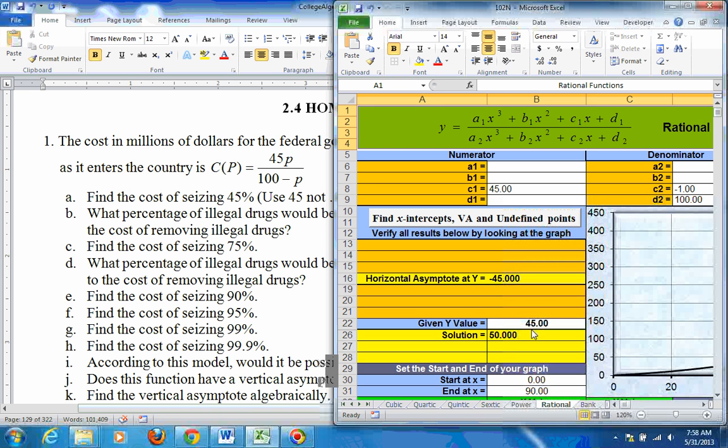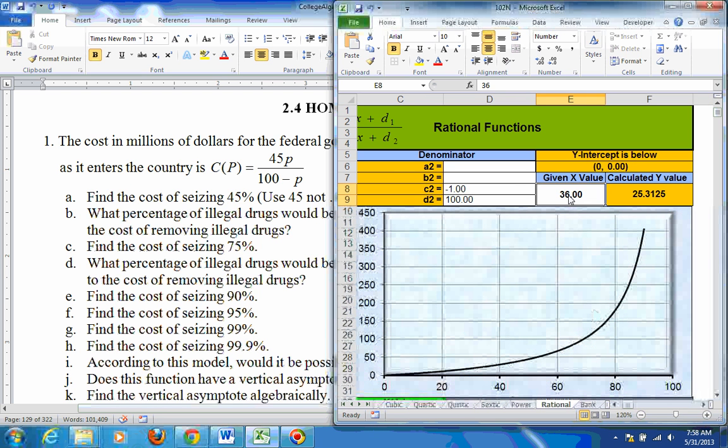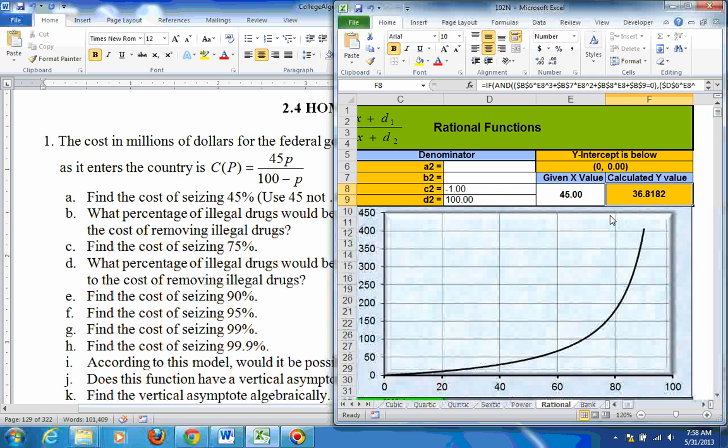After you put those in, we want to get the cost of seizing 45%. So put the 45, not here. Put it over here. Put it in the 45, and we get that the cost is $36.818 million.